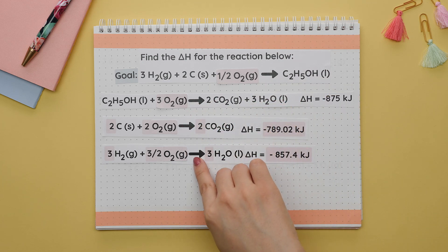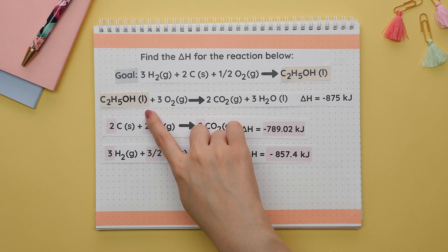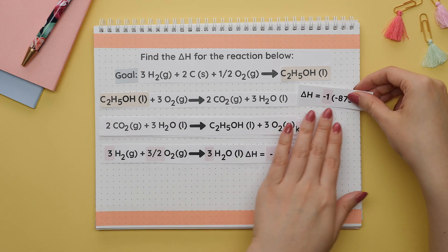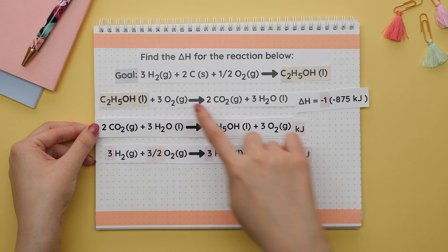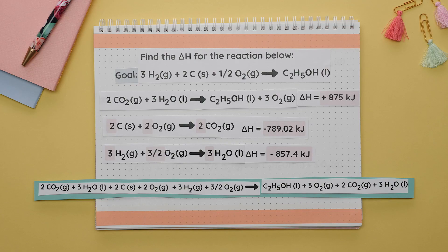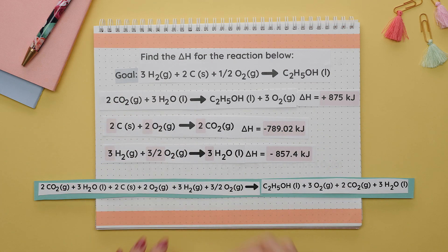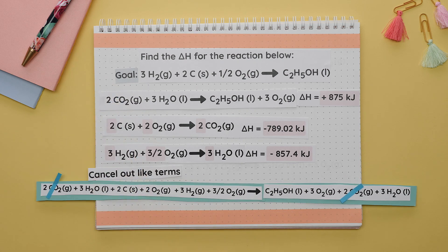Since O2 is found in multiple locations, we leave it to the end to see if it needs to be flipped, multiplied, or resolves on its own. Checking the product: the quantity is the same but it is on the reactant side instead of the product side, so we apply Rule 1 — flip the equation and multiply the enthalpy by negative one. The products become the new reactants and vice versa, making the enthalpy positive. Applying Rule 3, we place all reactants and products together and cancel like terms on opposite sides: the two CO2s and three H2Os cancel out.